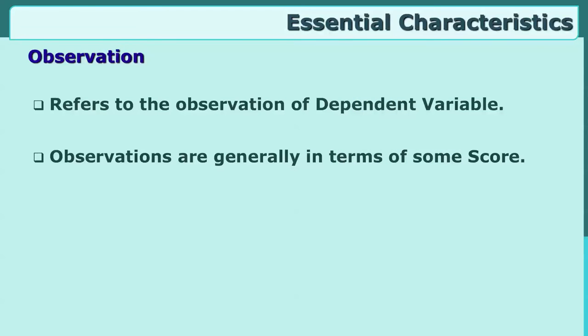The third essential characteristic is observation — specifically observation of the dependent variable, because the dependent variable is what changes. This can be done in a variety of ways using many tools: tests, observation schedules, and other instruments — but ultimately they will give you a score.